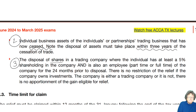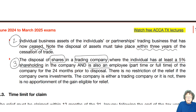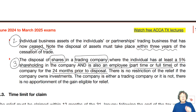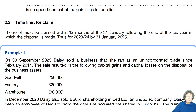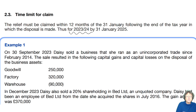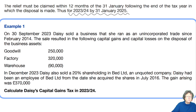The third situation is the disposal of shares in a trading company. The individual must have at least a 5% shareholding and must be an employee — part-time or full-time — for two years prior to disposal. All of these rules must be applicable to claim the relief. The relief must be claimed within 12 months of the 31st of January — the same as most claims — for 2023-24.